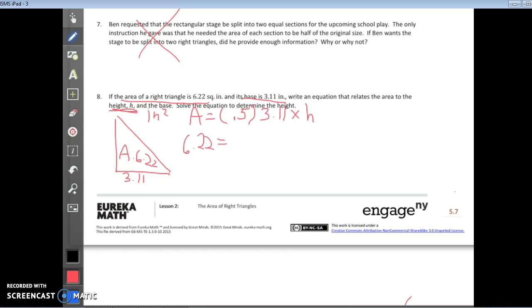Now let's multiply these together. 5 times 3.11: 5 times 1 is 5, 5 times 1 is 5, 5 times 3 is 15. Where do I put my decimal? I have 2 on this one and I have 1 on this one, so it's going to be 1 and 555 thousandths.